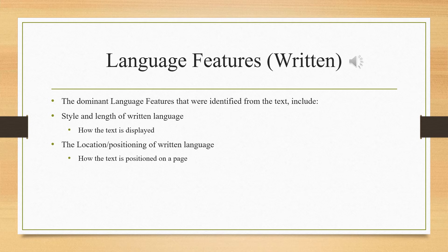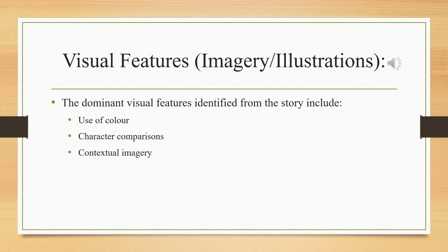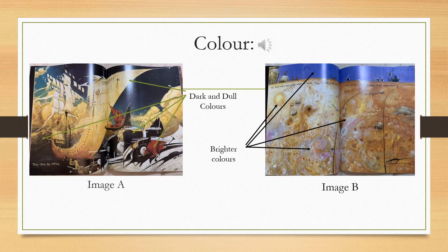The dominant visual features identified from the story include the use of colour, character comparisons and contextual imagery. Colour was used as a tool to set the tone of the scenes. For example, the colours in scene 1 are primarily dark and dull — blacks, blues, oranges, reds and whites. The use of darker colours creates a more foreboding and imposing scene, hinting at the idea that something bad will soon occur.